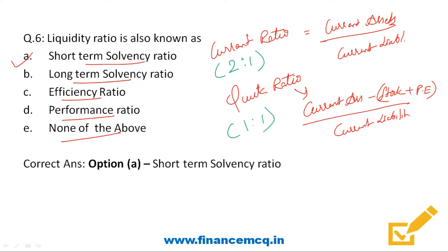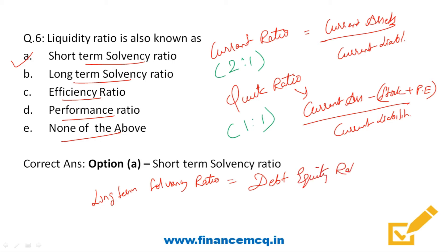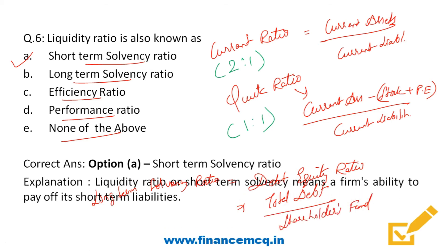Long-term solvency ratio is measured by debt equity ratio. The formula for debt equity ratio is total debt upon shareholders' fund. Liquidity ratio or short-term solvency refers to a firm's ability to pay off its short-term liabilities.